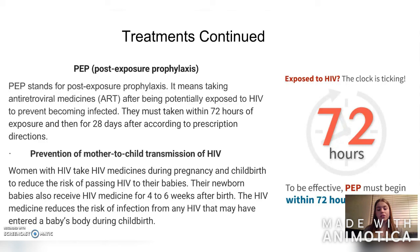To prevent mother-to-child transmission of HIV, women with HIV take HIV medicines during pregnancy and childbirth to reduce the risk of passing HIV to their babies. If a newborn is born with HIV, they will also need to start taking antiretrovirals — babies receive these four to six weeks after birth. The HIV medicines reduce the risk of infection from any HIV that may have entered the baby's body during childbirth.